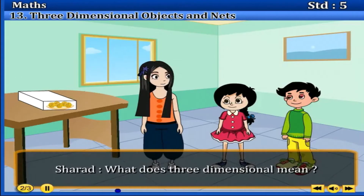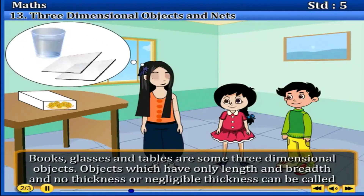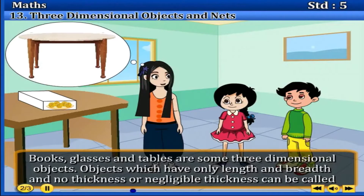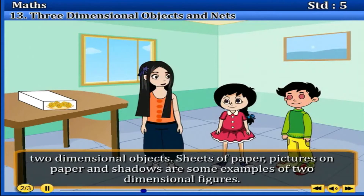Sharad asked, 'What does three-dimensional mean?' Tai answered, 'Three-dimensional objects are objects whose length, width, and height can be seen, felt, or measured. Books, glasses, and tables are some three-dimensional objects.'